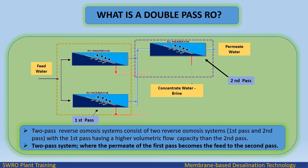Two pass reverse osmosis systems consist of two reverse osmosis systems — first pass and second pass — with the first pass having a higher volumetric flow capacity than the second pass. In a two pass system, the permeate of the first pass becomes the feed to the second pass.